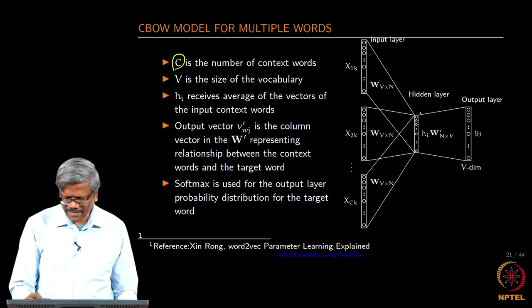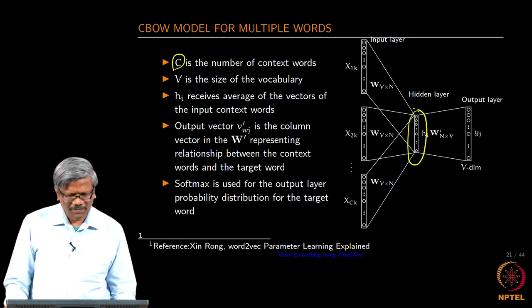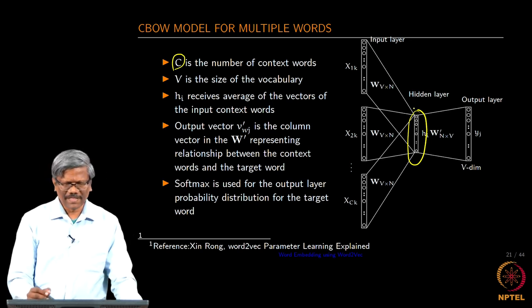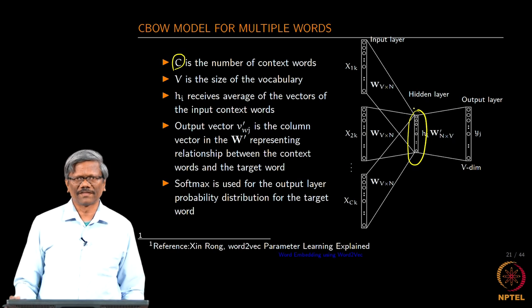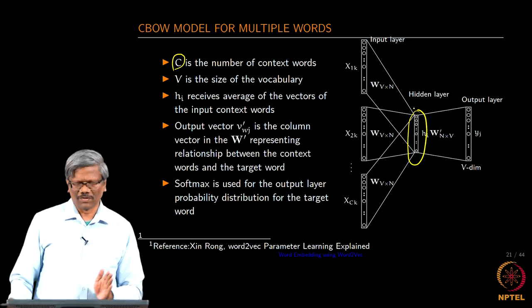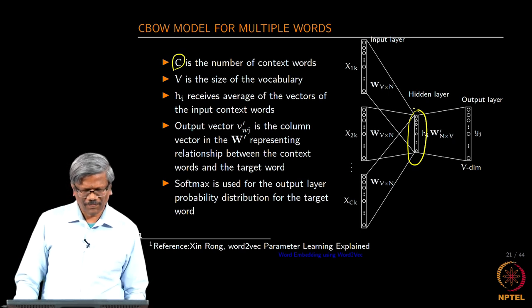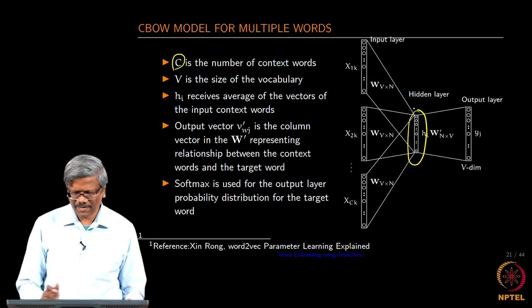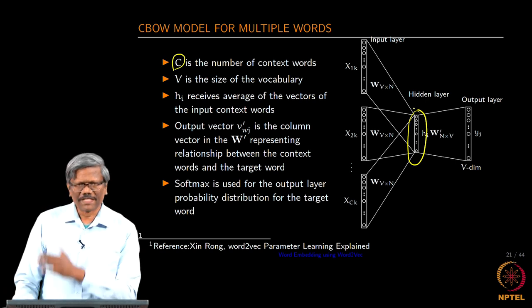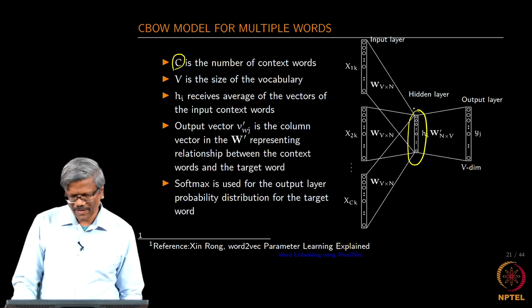And then in this case H_i receives the average of the vectors of the input. Since there are multiple contexts coming in the H is a linear combination of all of those. We call it as an average of the vectors of the input here. And then the computation of the output layer is very similar to what we have done earlier, there is no change there.